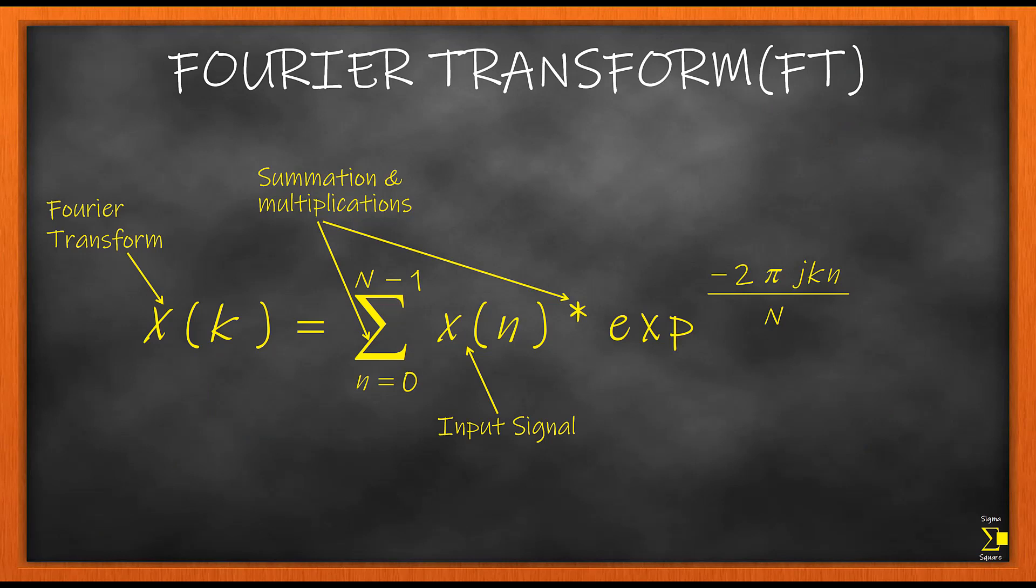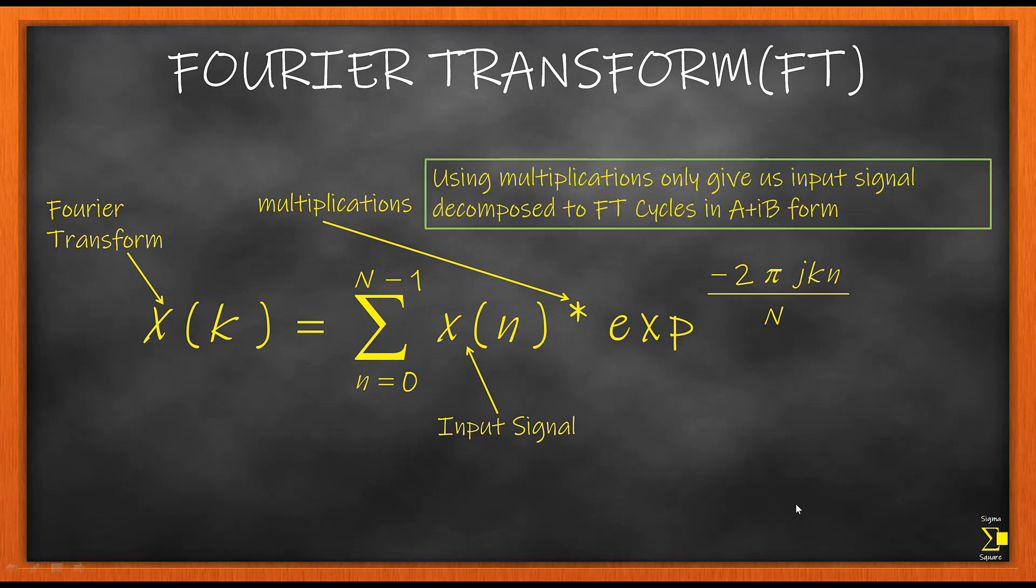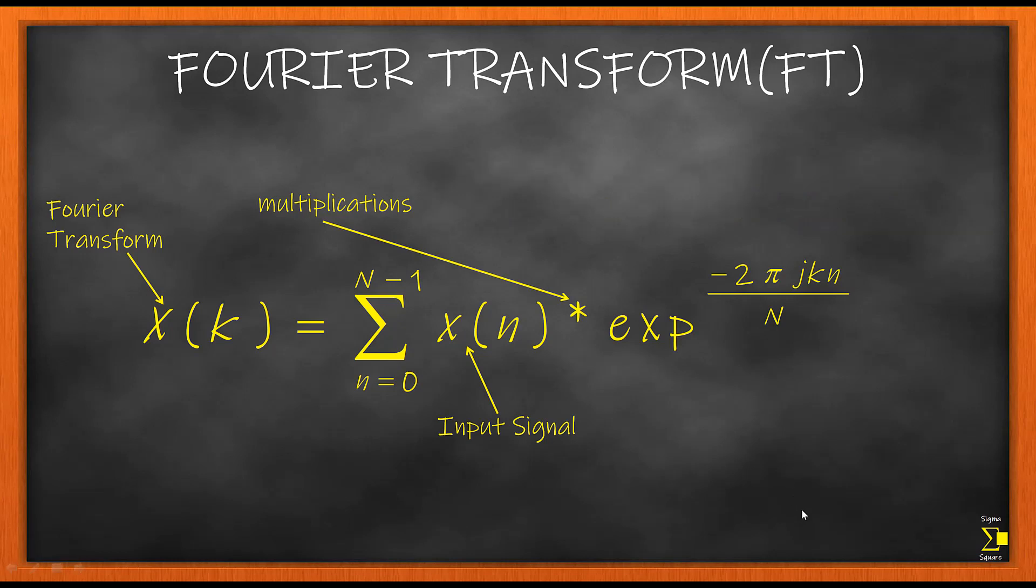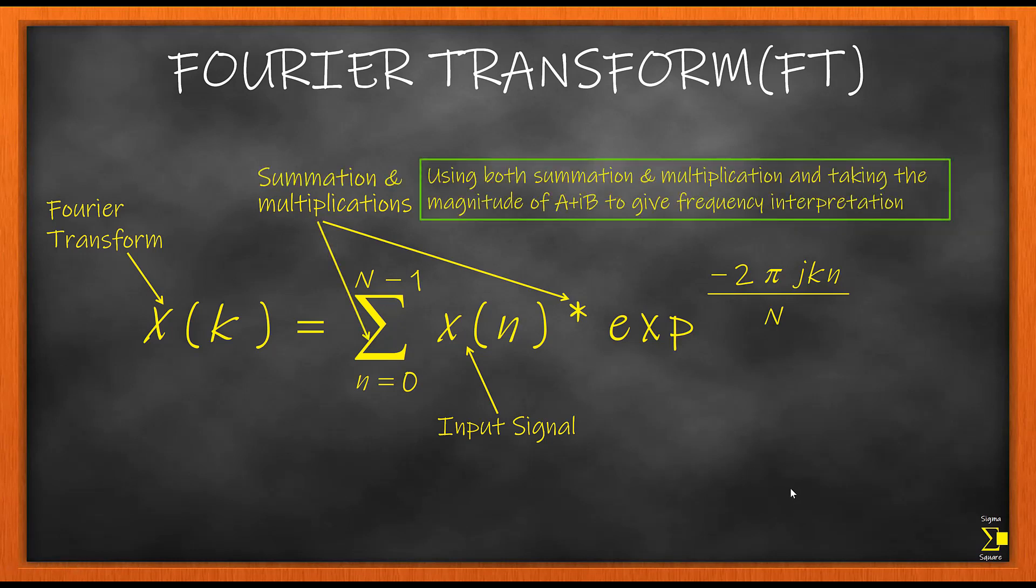In today's class we will be seeing the two important mathematical operators of the Fourier Transform. When we use the product for the multiplication, we get the FT in cycles for different values of k. If we use both the summation and multiplication, or if we take the sum of the products, that's when you get the frequency interpretation of your signal.